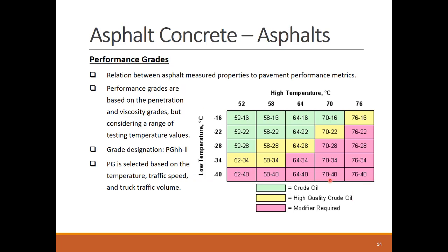The third grading system is based on asphalt mix performance, considering different quality metrics like penetration and viscosity. The performance grading is designed following high and low temperature schemes. The shown figure displays the different performance grades created by matching the different high and low temperature values, segregated using fixed 6-degree Celsius intervals. A high-performing grade mix is one that can perform well at both high and low temperatures. In addition to temperature, the asphalt performance grade is selected considering the traffic speed and truck traffic volume. A low traffic speed and high traffic volumes require upgrading the performance grade to increase the pavement durability.